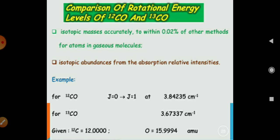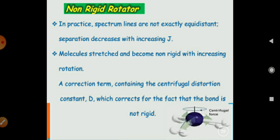Now, what is the rigid rotor, non-rigid rotor. In practical, spectrum lines are not exactly same as the theoretical lines. So, the separation decreases with increasing value of J.